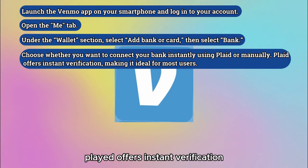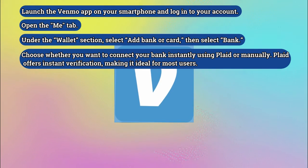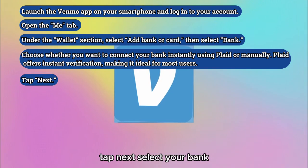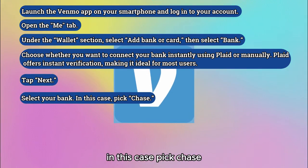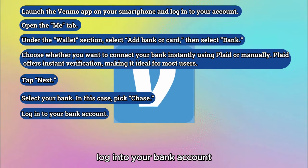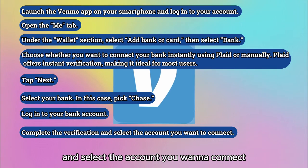Plaid offers instant verification, making it ideal for most users. Tap Next and select your bank — in this case, pick Chase. Log into your bank account, complete the verification, and select the account you want to connect.